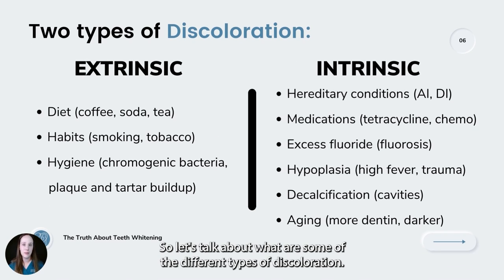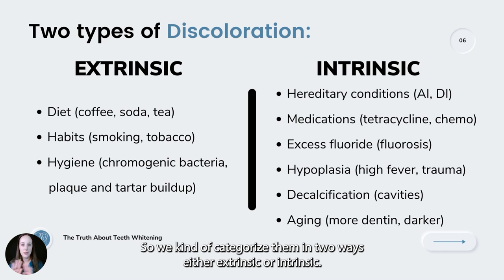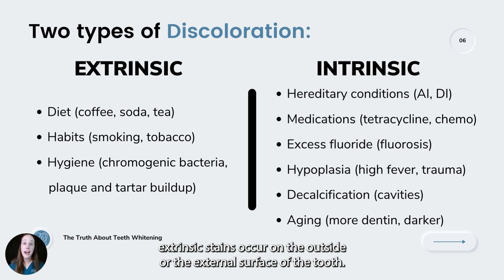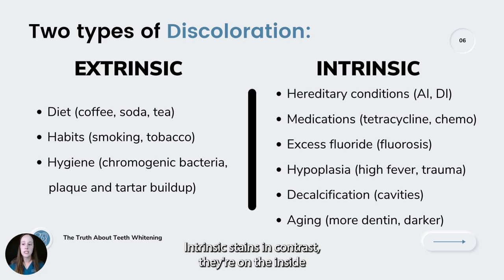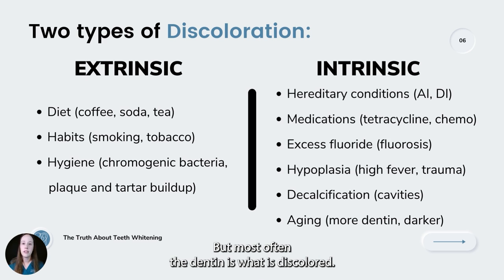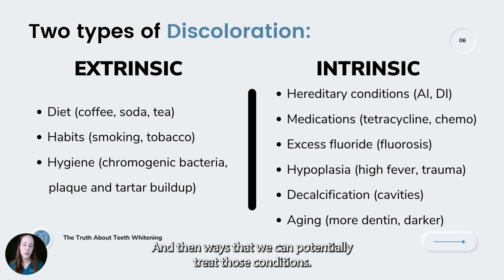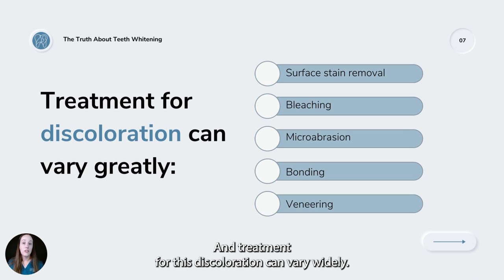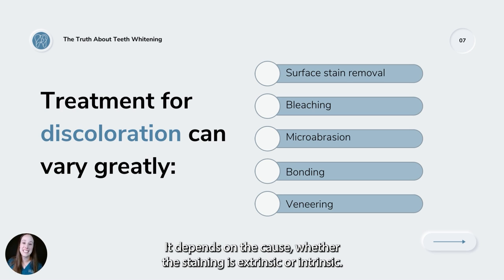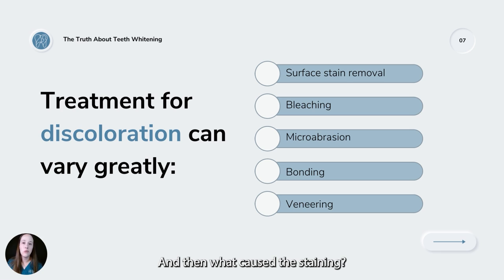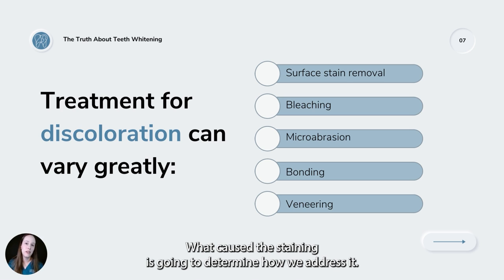One of the most often sought reasons people seek dental care is for discolored teeth. We categorize discoloration in two ways: extrinsic or intrinsic. Extrinsic stains occur on the external surface of the tooth. Intrinsic stains are on the inside, either in the enamel or the dentin. Treatment for discoloration can vary widely — it's not just bleaching. It depends on the cause, whether the staining is extrinsic or intrinsic, and what caused the staining.